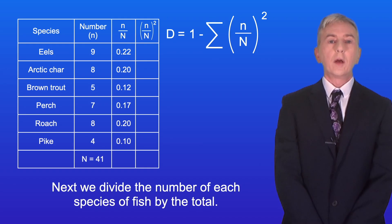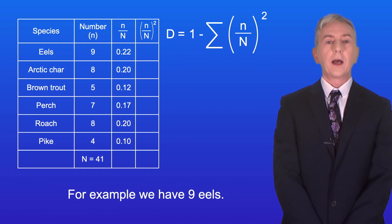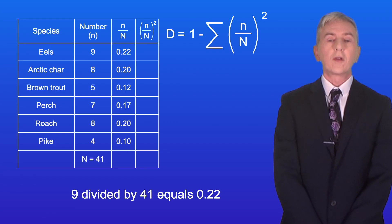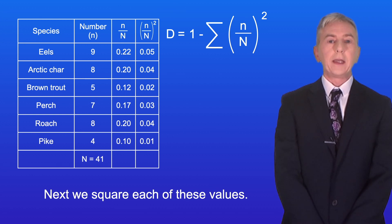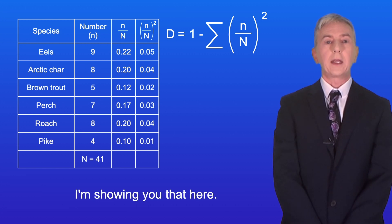Next we divide the number of each species of fish by the total. For example, we have 9 eels. 9 divided by 41 equals 0.22. Next we square each of these values and I'm showing you that here.